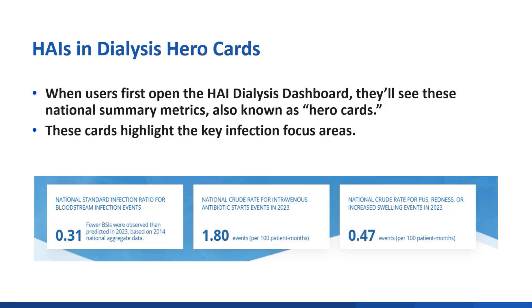Most of the data we'll see in the other sections can be filtered by year. However, here in the HERO cards, they only report the most recent year available, which is 2023. The first HERO card is for the SIR for bloodstream infections. For 2023 data, we have a SIR of 0.31. The SIR of less than one indicates that there are fewer BSIs observed than predicted. This is a reduction of almost half from 2019, the first year of data, which was 0.60.